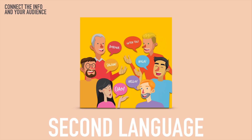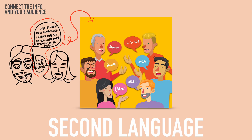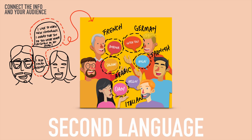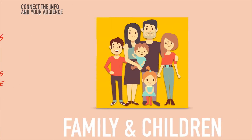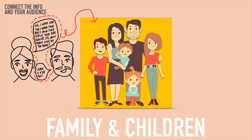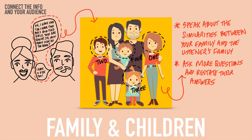Or if you're speaking about a second language and the individuals you're talking to have also learned a second language, you can connect by finding out if they spoke French, German, Spanish, Arabic, or Italian. Then restate a previous point they made about language or ask more details about the language they speak. You're focused the entire time on connecting the information with your audience. Similarly, if you're speaking about family and you find out they have kids and you also have kids — maybe four — you can connect by speaking about the similarities between your families.